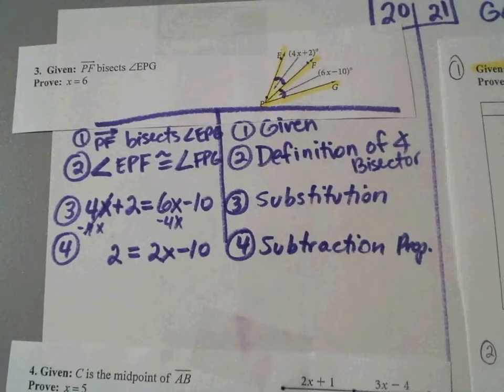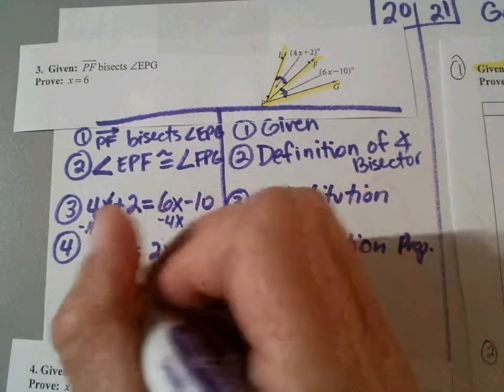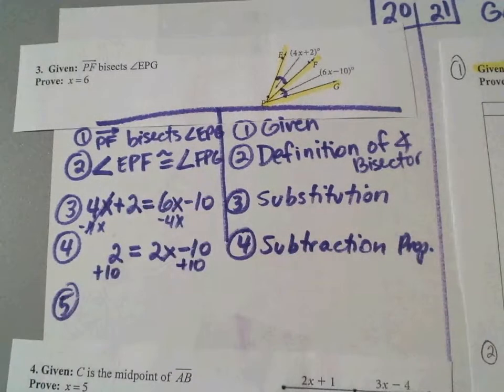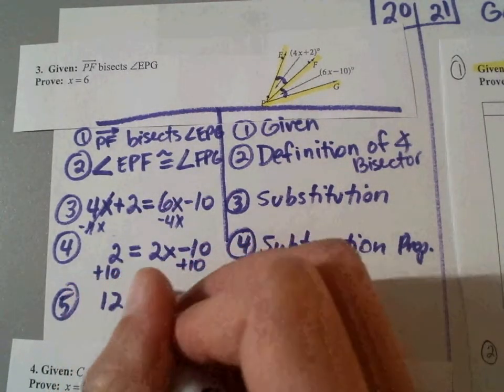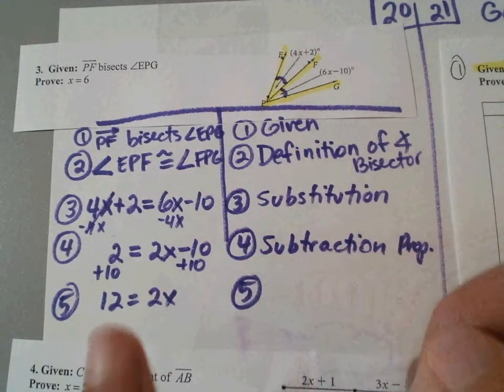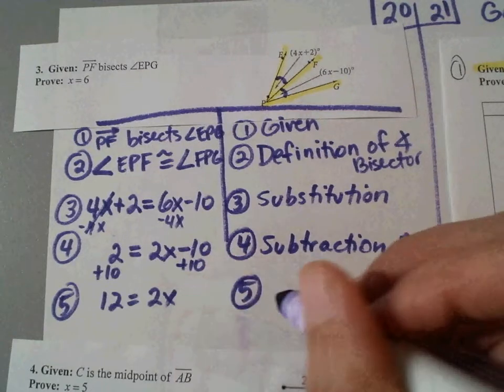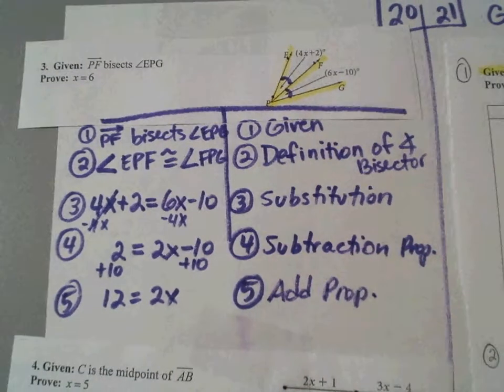Okay. We're almost there. I've got to get X by itself still. What's next? Yep. Add what? 10 to both sides. Write that small. So step 5, you get 12 equals 2X. Good job. And that was because you did what? Addition property. I'm just going to write add.